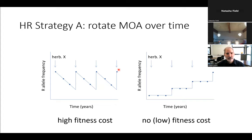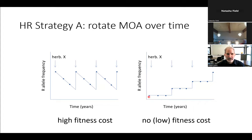What if resistance to a tool doesn't cost the plant anything? Then that resistance trait just hangs out in the population and is only enriched each time you bring the tool back. You can see how you need to understand the trait and how it affects fitness in order to begin planning strategies.